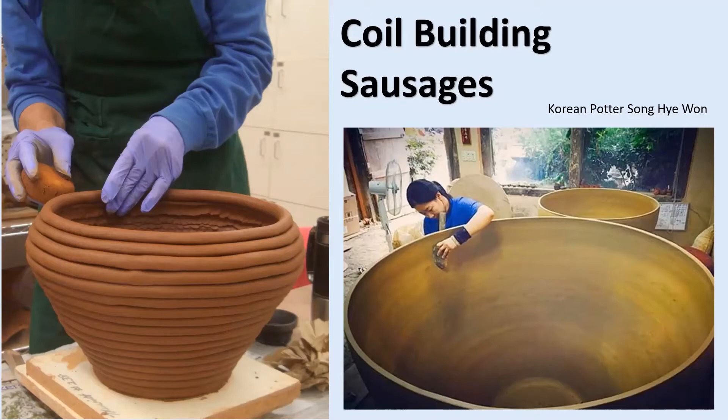Here we have Korean potter Song Hee Won, who is building a huge Korean vessel called an Onggi — a rounded vessel. She's building an absolutely massive one, one of the biggest ever made. I thought it'd be good to show that coiling can be scaled up to make quite huge and complicated things, not just the little pots we do at the Coach House.